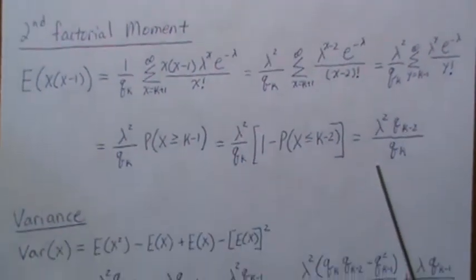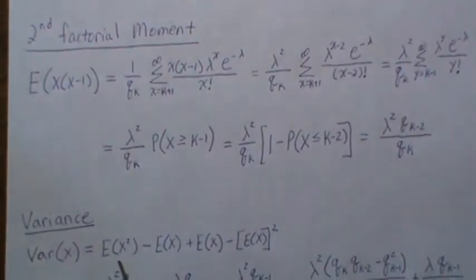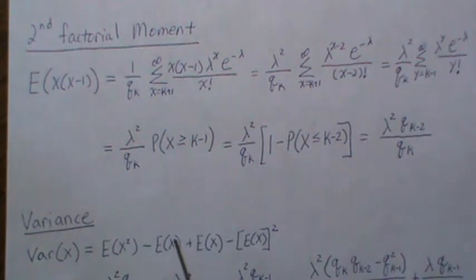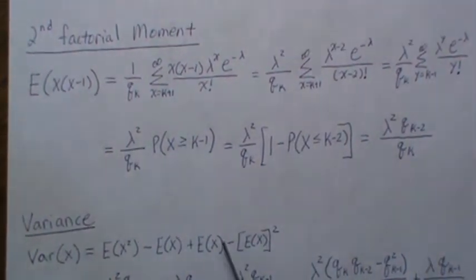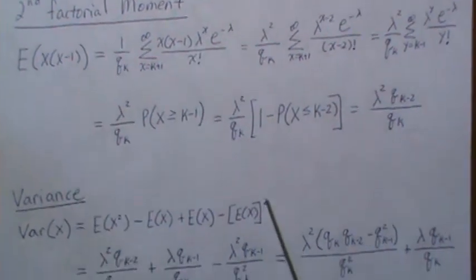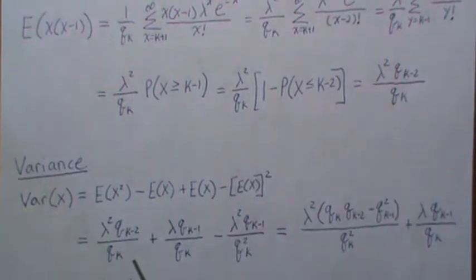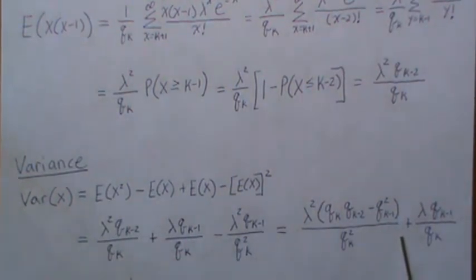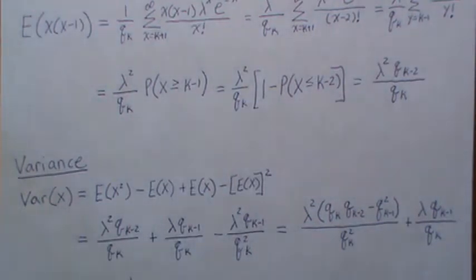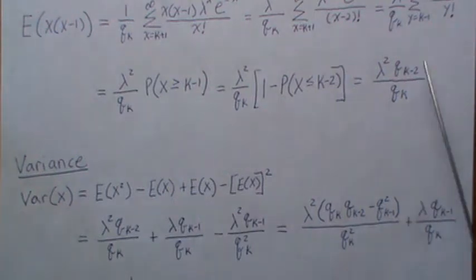To calculate the variance, we use Var(x) = E[x²] - (mean)². We add a well-chosen zero so the first part becomes the second factorial moment plus the mean. Plugging in what we know for the second factorial moment, the mean, and the mean squared, this simplifies to the formula for the variance of a k-truncated Poisson distribution.